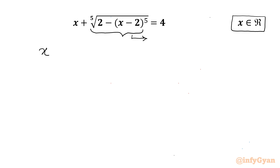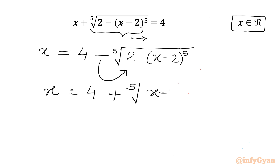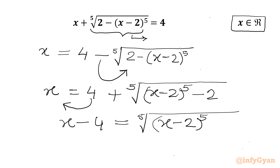I can write the equation as x equals 4 minus the fifth root of (2 minus x minus 2) whole power 5. Can we take this minus sign into the radical? So x will become 4 plus the fifth root of (x minus 2) whole power 5 minus 2. Now I can take this 4 to the LHS, so I can write x minus 4 equals the fifth root of (x minus 2) whole power 5 minus 2.